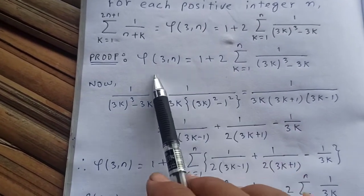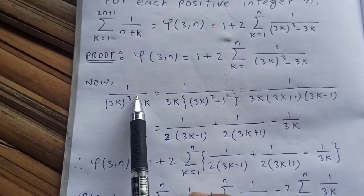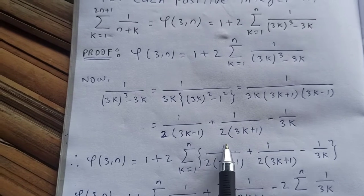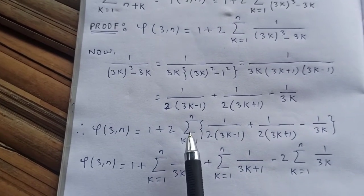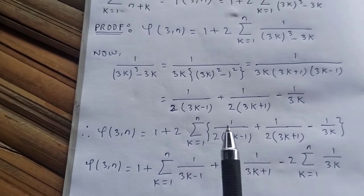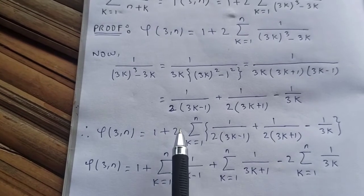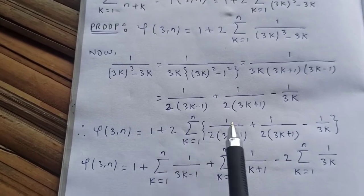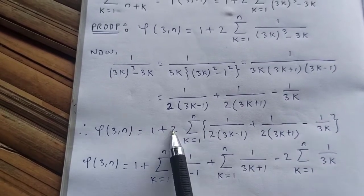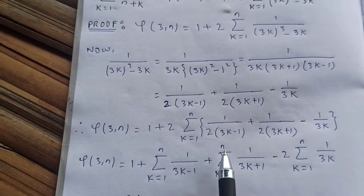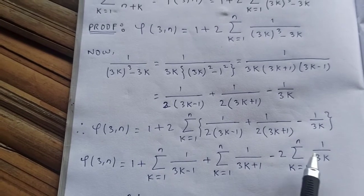So φ(3, n) is 1 plus 2 times the sum from k=1 to n of [1/(2(3k−1)) + 1/(2(3k+1)) − 1/(3k)]. Distributing the 2 into the sum, the factors of 2 cancel, giving: φ(3, n) = 1 + Σ 1/(3k−1) + Σ 1/(3k+1) − 2·Σ 1/(3k), where all sums run from k=1 to n.